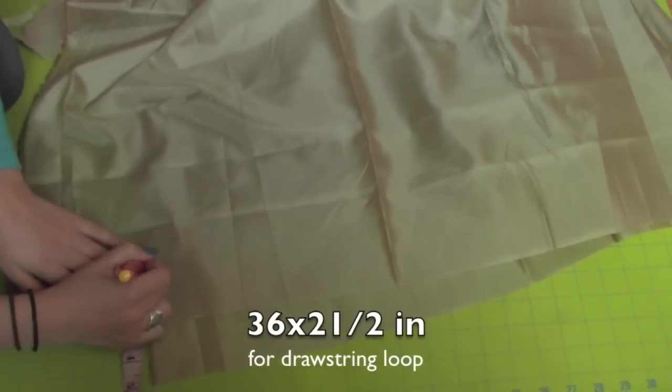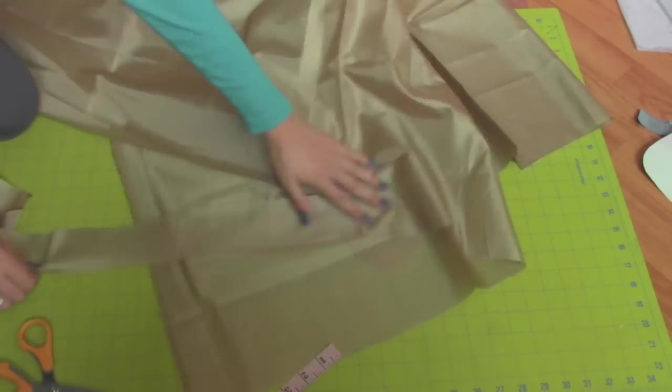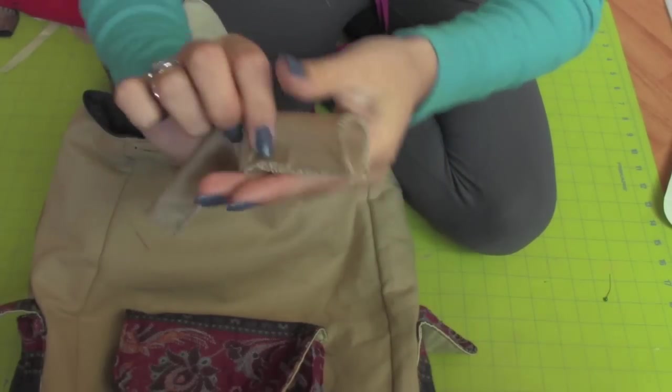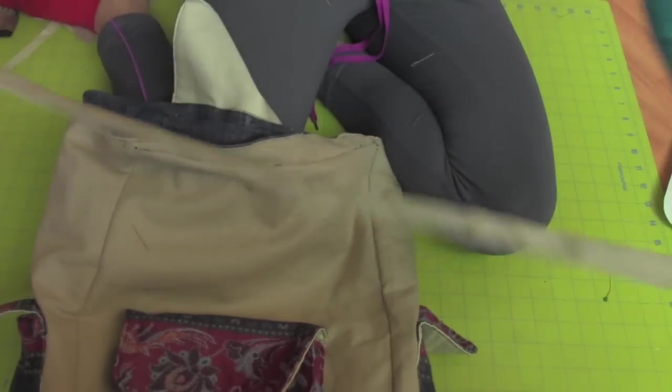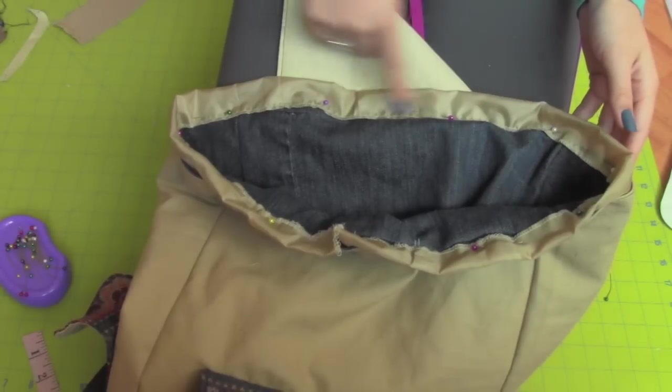Now I'm taking a 2.5 by 36 inch strip of lining to create the drawstring loop. Place it right sides together and sew or place it wrong sides together if you're using a serger. Sew along the top seam leaving the open ends at the front of the bag.